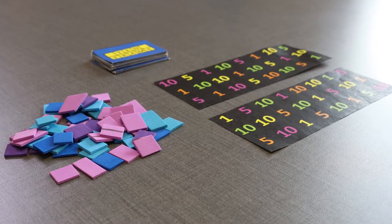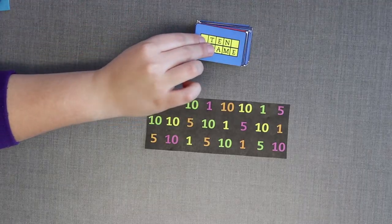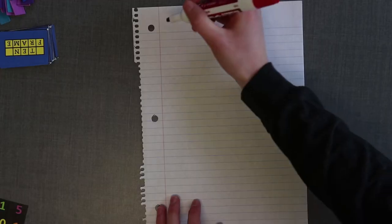The oldest player goes first. On your turn draw a card from the pile. Say the number aloud. This is your blackout number. Break apart the number into tens, fives, or ones.